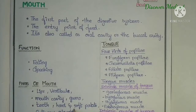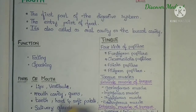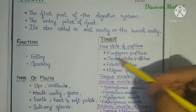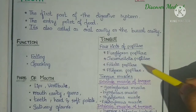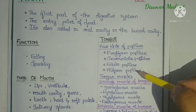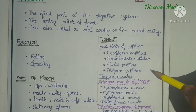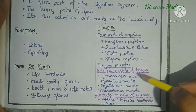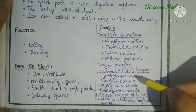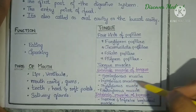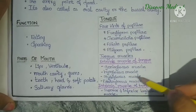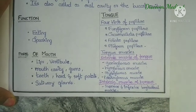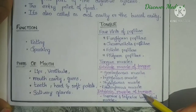Other parts include teeth, hard and soft palate, and salivary glands. The tongue has four kinds of papillae: fungiform papillae, circumvallate papillae, foliate papillae, and filiform papillae. Tongue muscles include extrinsic muscles — genioglossus, hyoglossus, styloglossus, and palatoglossus — as well as intrinsic muscles of the tongue.